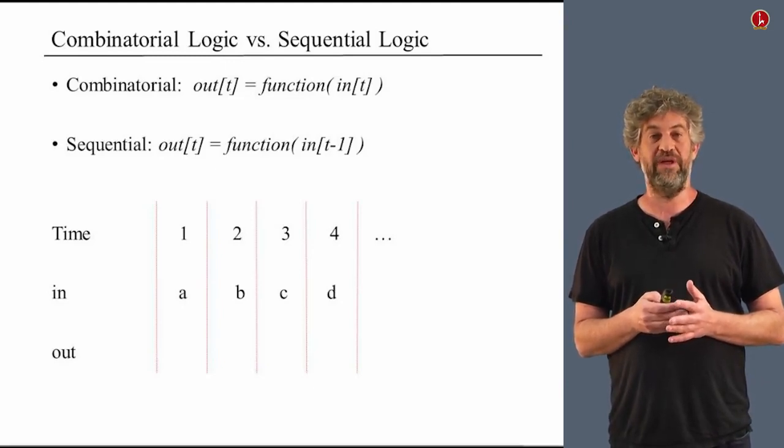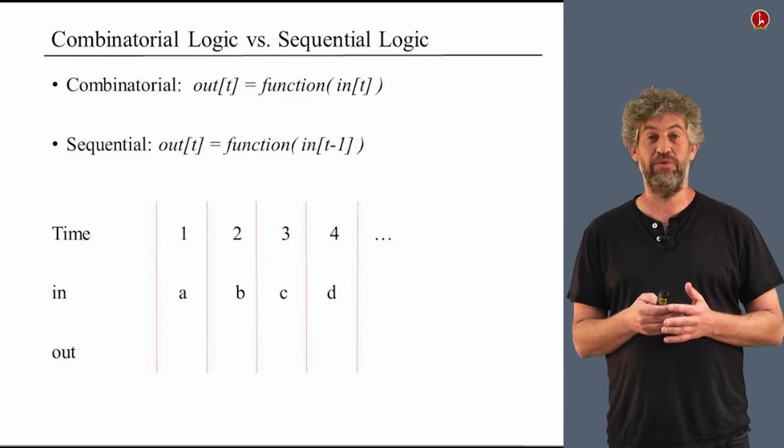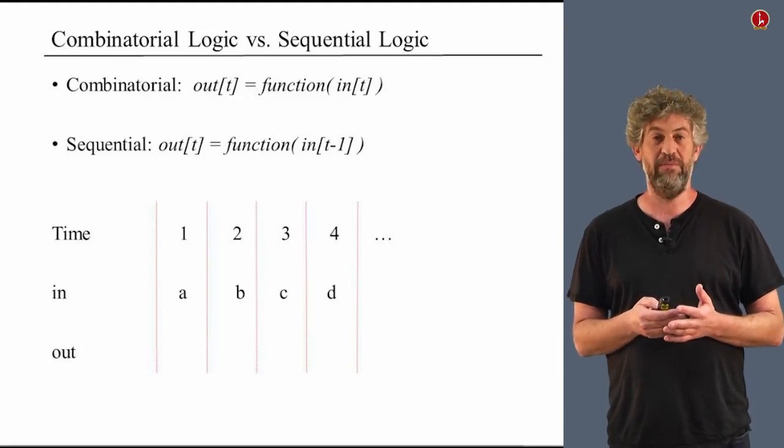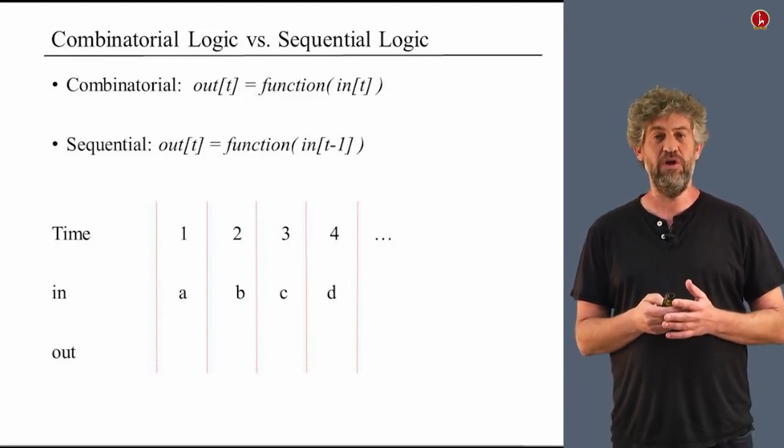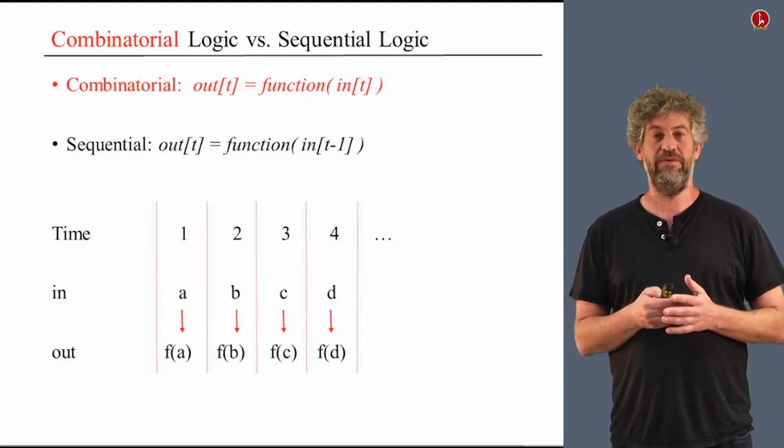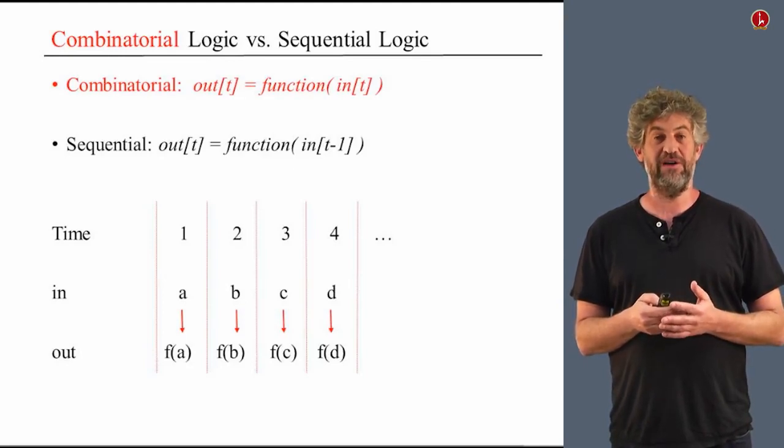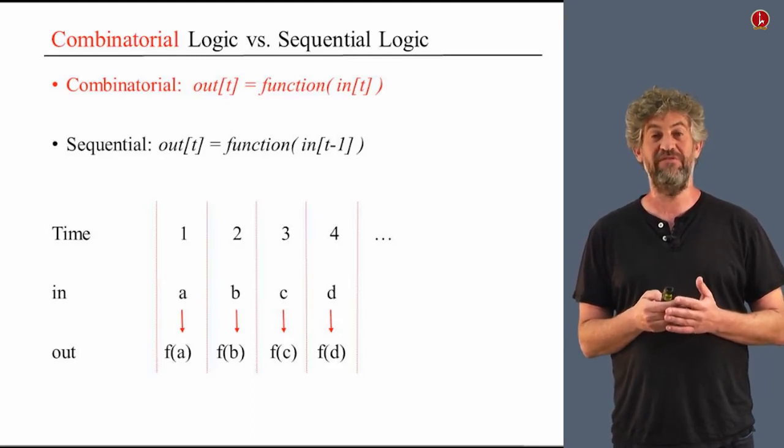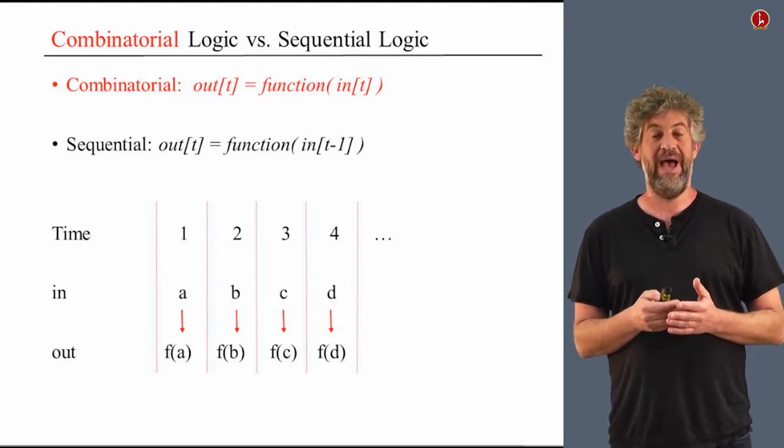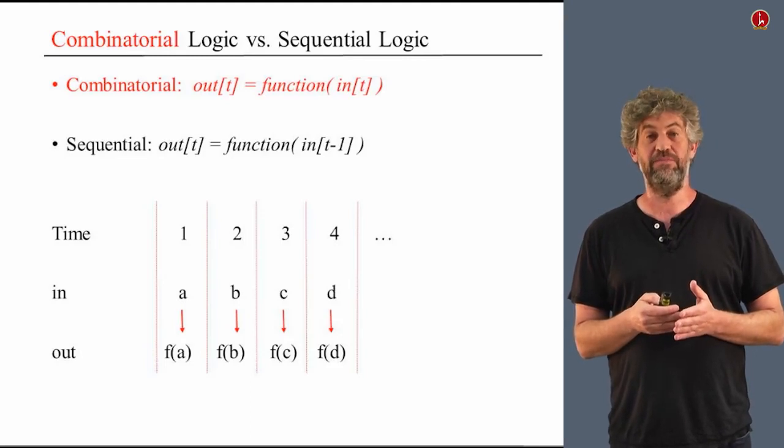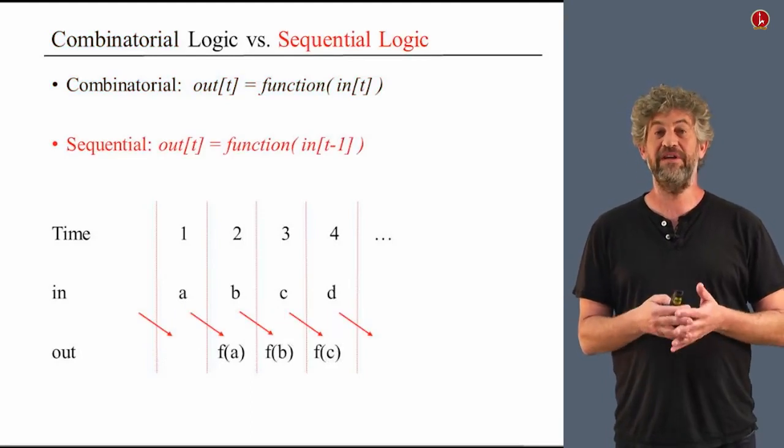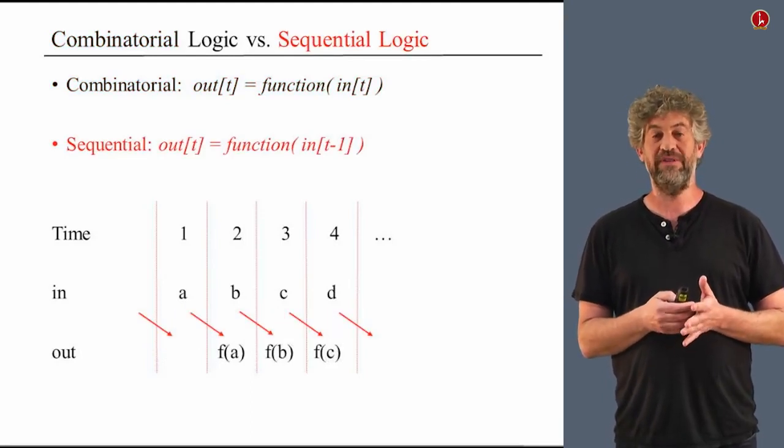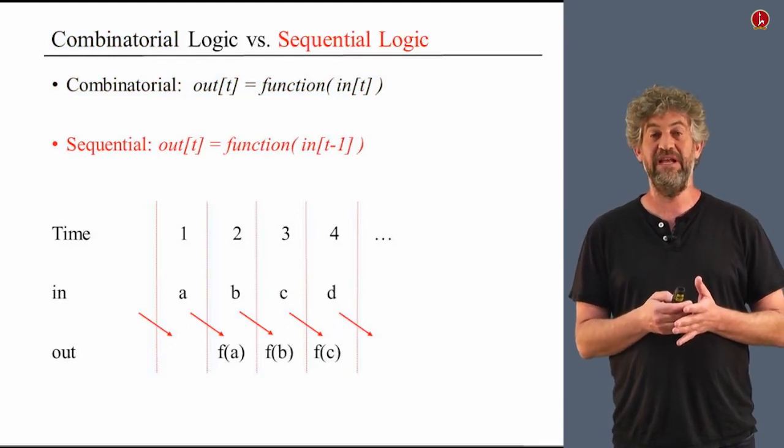And if the input is a, b, c, d, whatever input—it can be a single bit, it can be a multi-bit bus. In combinatorial logic, at each time unit point, a was converted to some function of a. So the output at time two was the function of the input at time two. And each time unit, we could have a different input and different output. When we have sequential logic, the output at time t depends on the input at time t minus one and what happened previously.